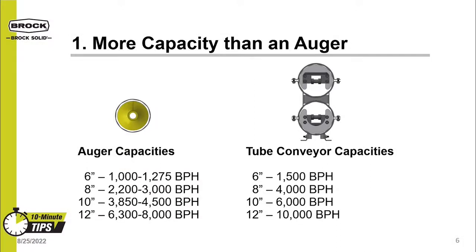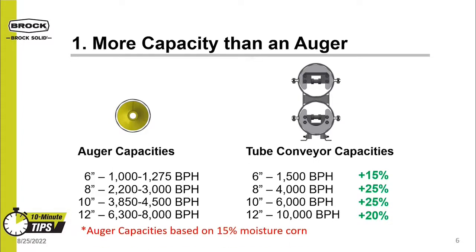The first reason to switch to a tube conveyor is the increased capacity over an auger. Tube conveyor capacities range from 1,500 to 10,000 bushels per hour — a 15 to 25% increase over an auger. Another added benefit is that the capacity is not significantly reduced when running higher moisture grains. Auger capacities are based on 15% moisture corn and will decrease with higher moisture grains, so the tube conveyor's capacity advantage increases even further when compared to high moisture grains.